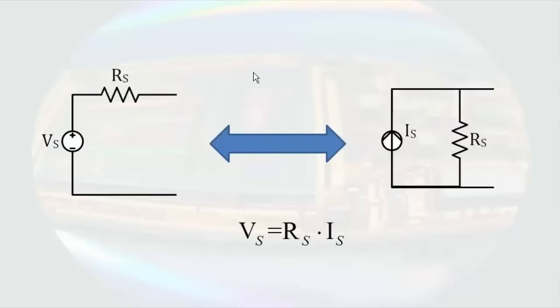In generalized terms, we could write it like this. If we had a current source on the right, we can make the equivalent voltage source on the left by using Ohm's Law to calculate the value of the voltage source. And if we had a voltage source on the left, we wanted to represent it as the current source on the right, we again use Ohm's Law to determine the value of the current source.